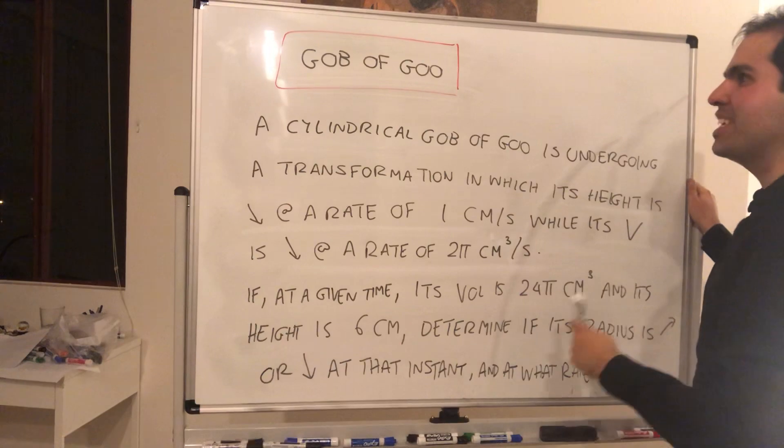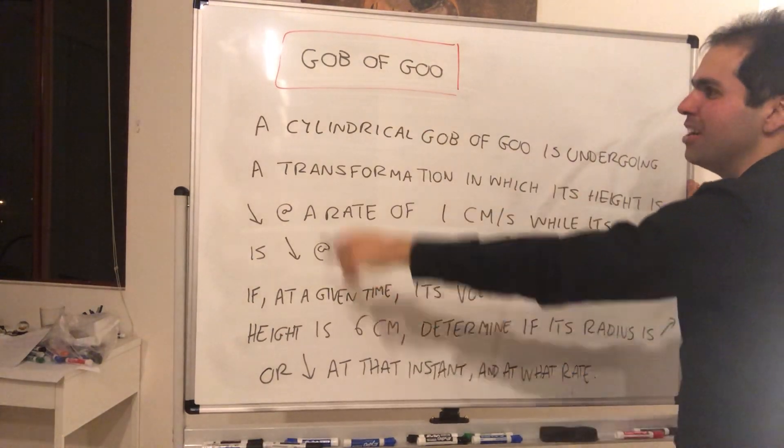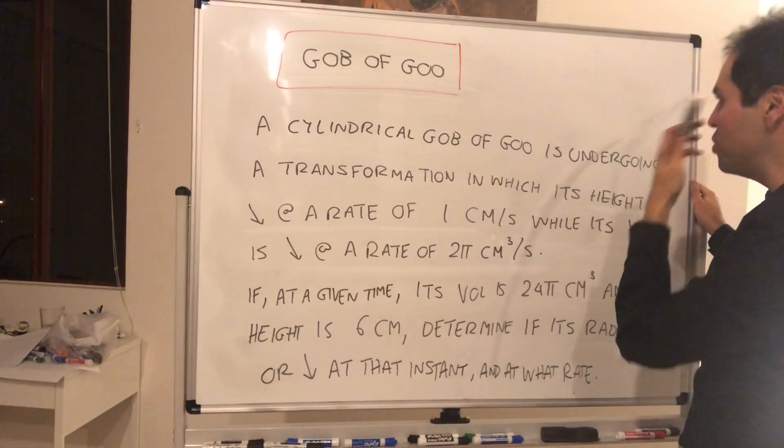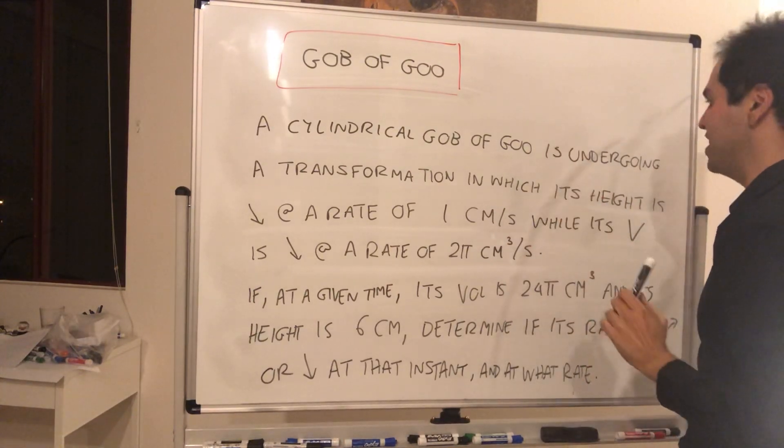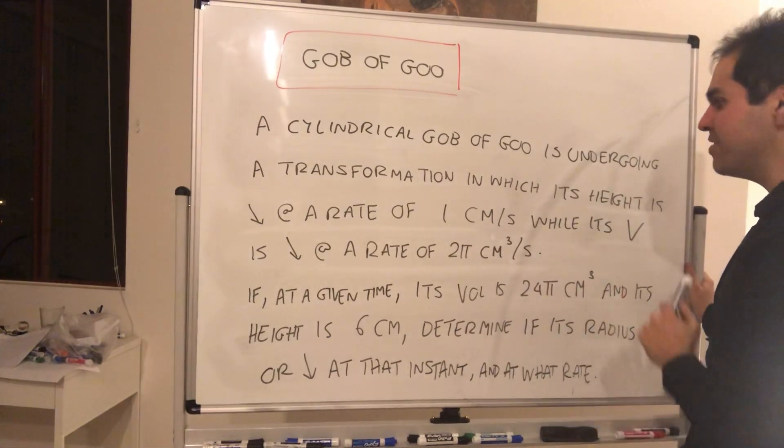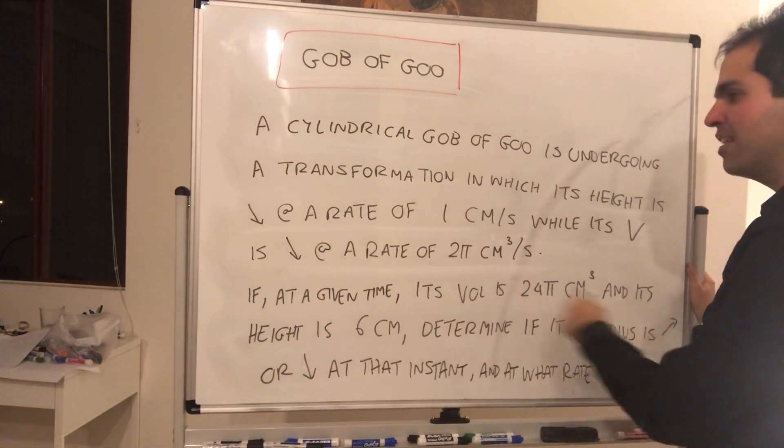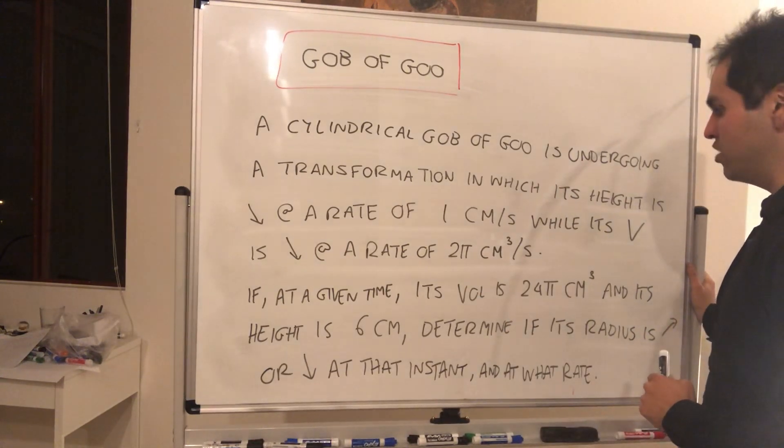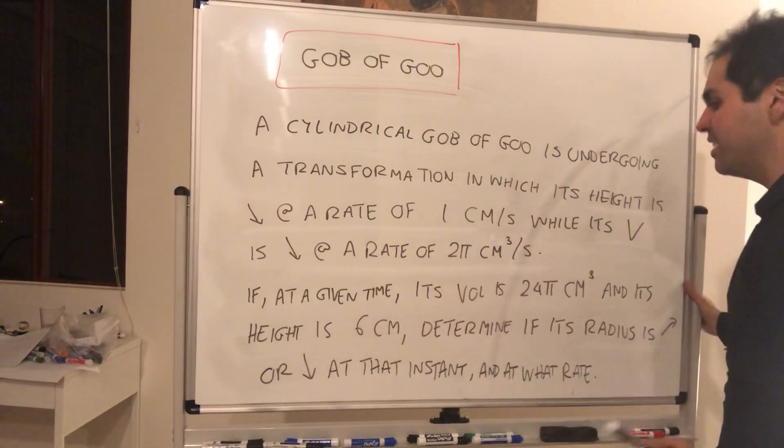So consider this spooky gob of goo, which you know as follows. A cylindrical gob of goo is undergoing some transformation in which its height is decreasing at the rate of 1 cm per second, while its volume is decreasing as well at the rate of 2π cm³ per second.